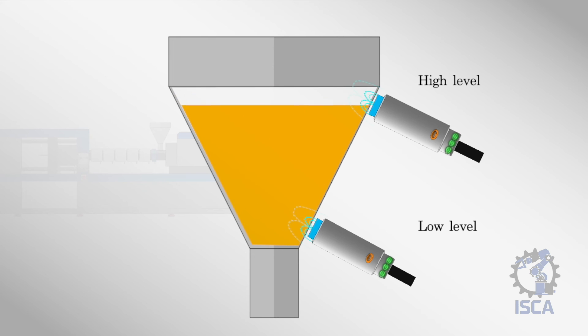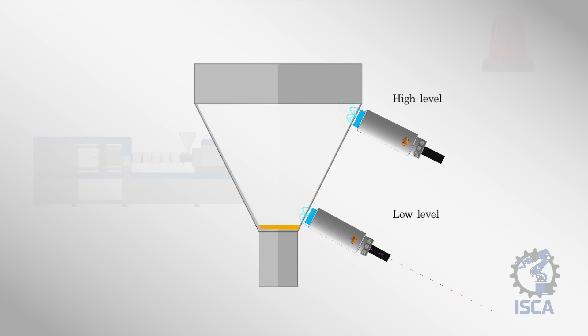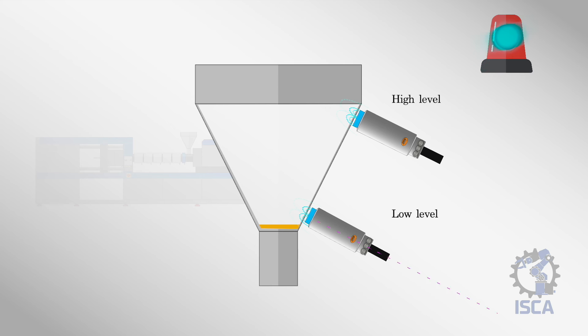When the material descends past the sensor due to ongoing usage, the capacitance change activates the sensor's output. This triggers an alarm to alert the operator to replenish the hopper. By proactively monitoring the fill level, capacitive sensors help ensure continuous and uninterrupted operation.